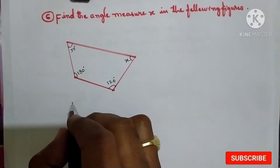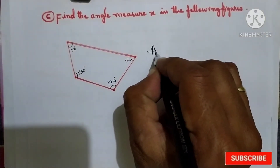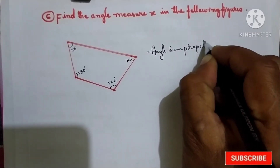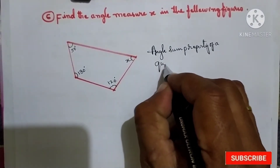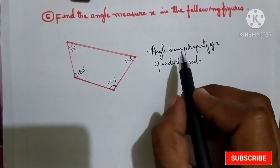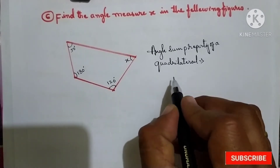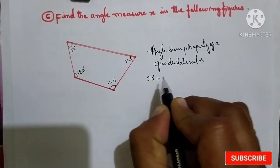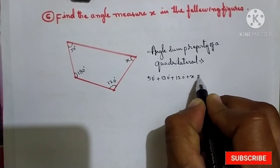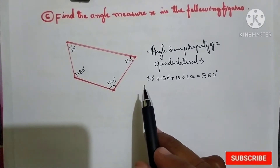Now in this figure, you know that the angle sum property of a quadrilateral — that means here we have to add all the 4 angles: 50 degrees plus 130 degrees plus 120 degrees plus x is equal to 360 degrees. The sum of all 4 angles of a quadrilateral is equal to 360 degrees.